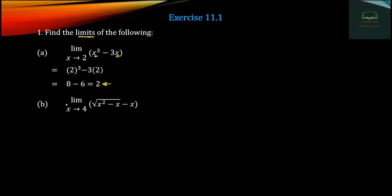Number 2 is equal to the limit of x tending to 4 of x² minus x, minus h. We can write the limit as x tends to 4. So we write the limit, and we can write the square root of 4 squared minus 4, minus 4.